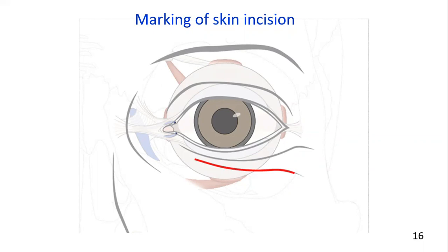Some patients have two or more subtarsal lid creases superior to the orbital rim. Either crease can be used in a trauma setting, whereas the superior crease would be a better choice for the aesthetic patient. The subtarsal incision should be as close to the tarsal plate as feasible in patients with lower eyelid creases — the crease closest to the tarsal plate should be chosen. The same rule applies in a younger patient without creases on the lower lid.